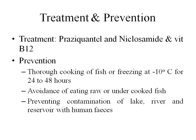Treatment is with praziquantel or niclosamide, along with vitamin B12 supplementation and suitable therapy for pernicious anemia. Prevention includes thorough cooking of fish or freezing at minus 10 degrees Celsius for at least 24–48 hours to kill the plerocercoid larva, avoidance of raw or undercooked fish, and preventing contamination of lakes, rivers, and reservoirs with human feces.